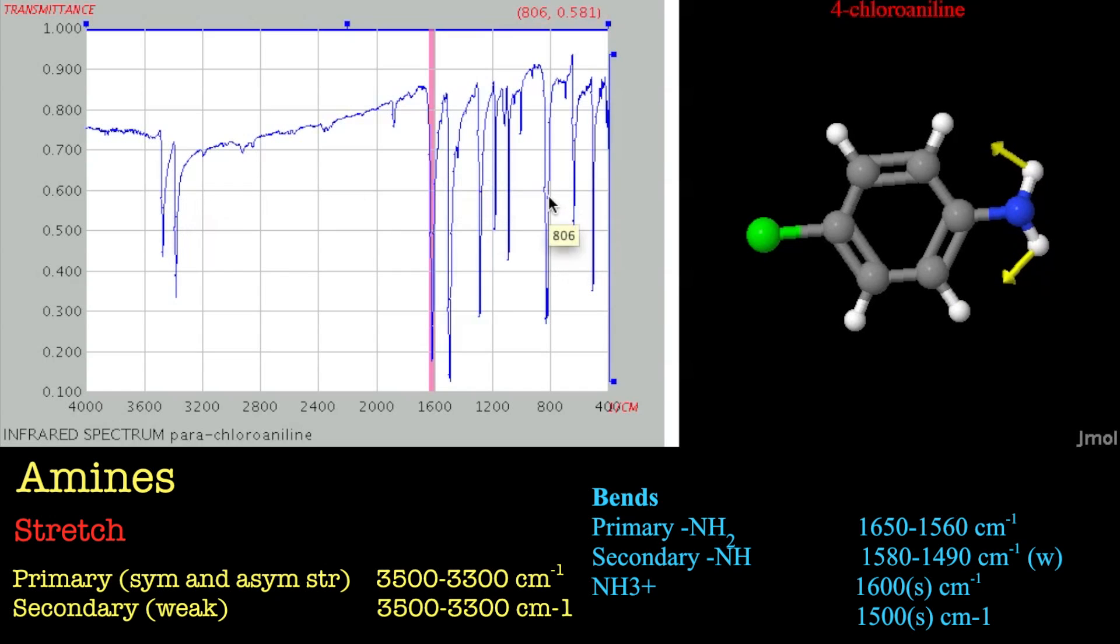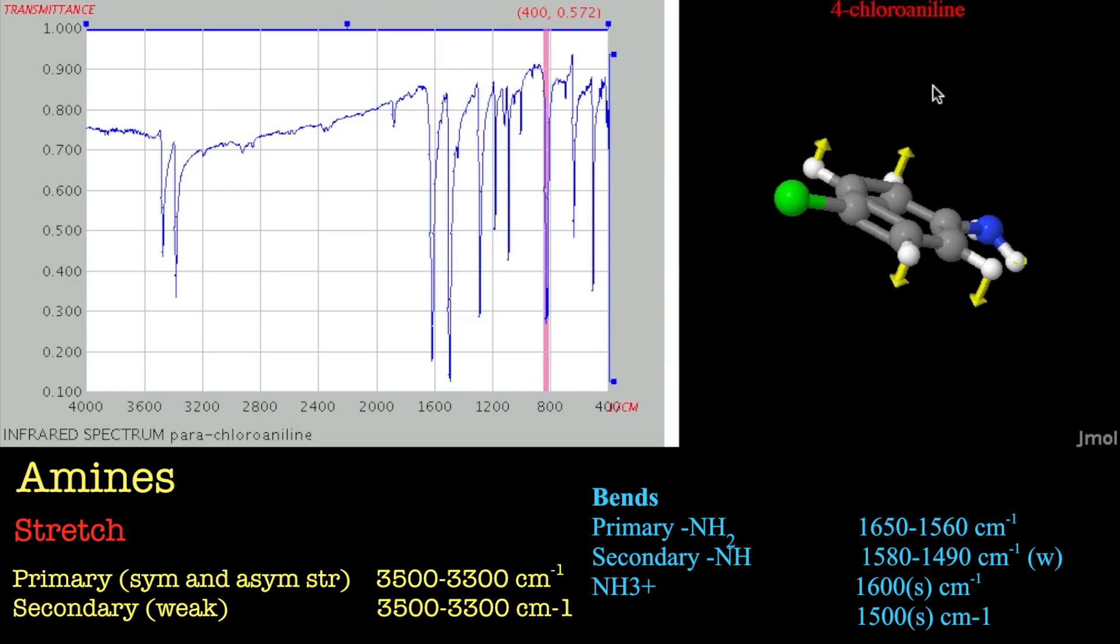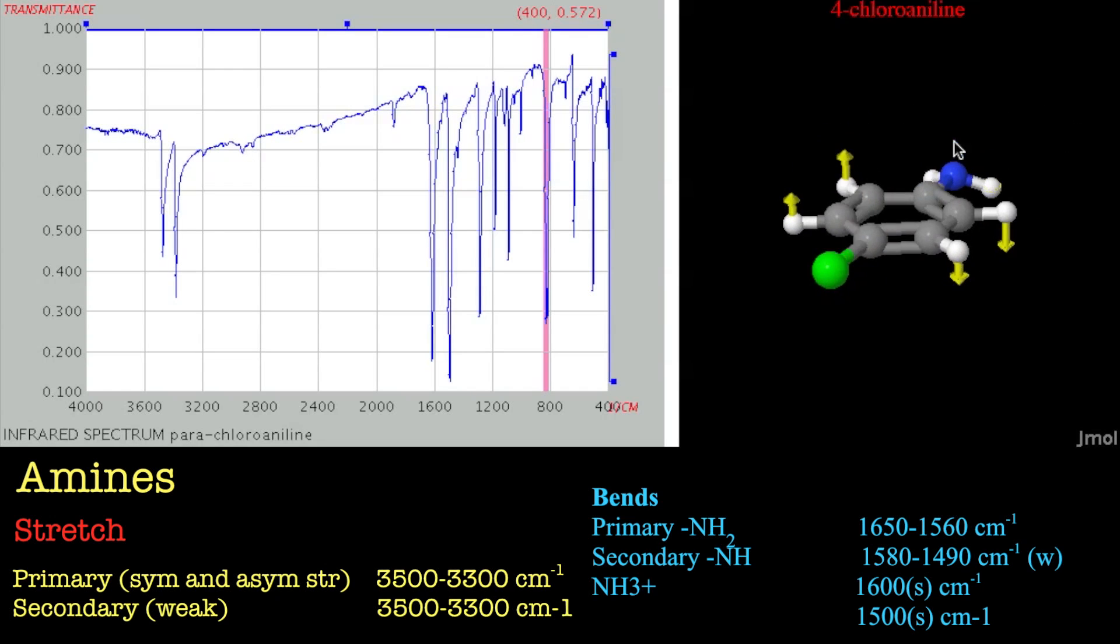But these kind of things they get a bit confusing and you're not expected to be able to predict that to be honest. Sometimes you might be expected to know about these out of plane bends, so if you notice this is like an asymmetric out of plane from the benzene ring, the CHs go up and down like that.